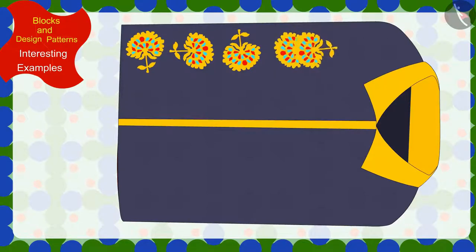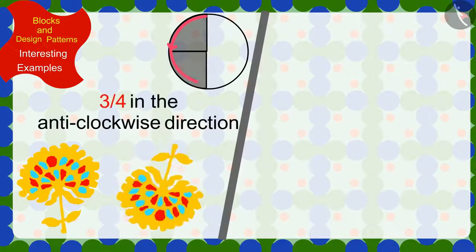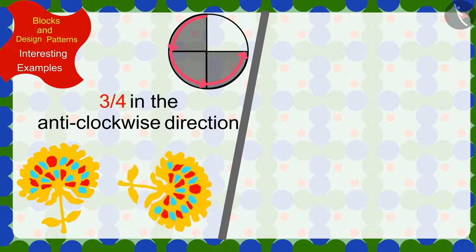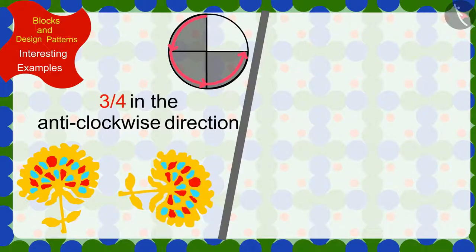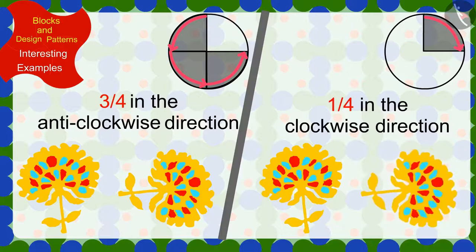Oh wow, you found the rule! To make this pattern, Kittu has rotated the previous impression three-quarters in the anti-clockwise direction or one-quarter in the clockwise direction every time.